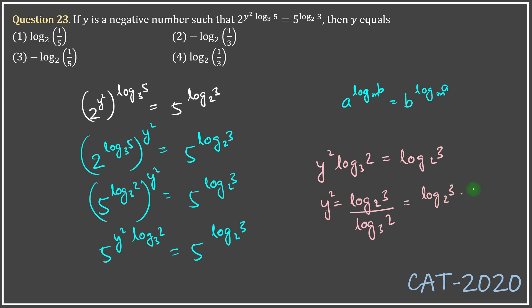So, I've again used a law of logarithm here that is log of m to the base a equals 1 over log of a to the base m. So, I can conclude that y square equals log 3 to the base 2 whole squared.